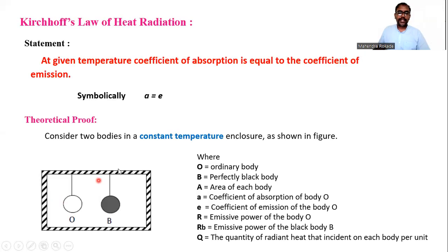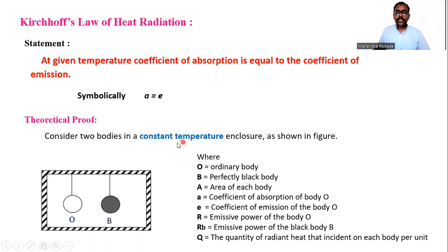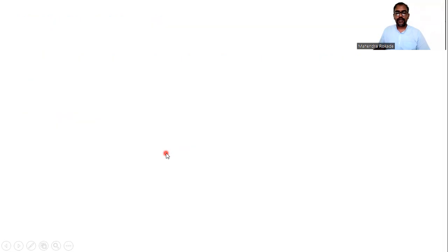Now, remember one important thing: both bodies are in a constant temperature enclosure, so temperature is constant. When a body absorbs heat, temperature increases; when a body emits heat, temperature decreases. But since temperature is constant, heat absorbed must equal heat emitted.